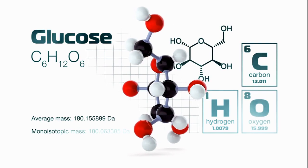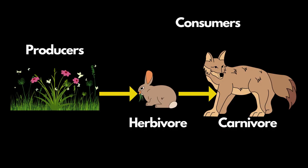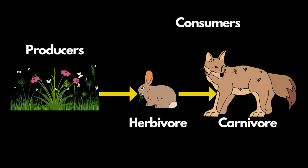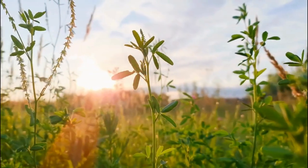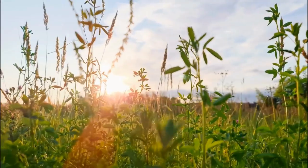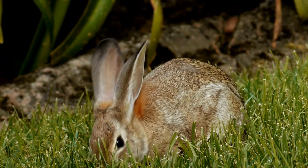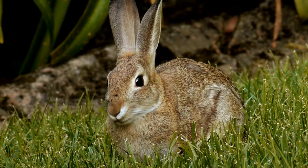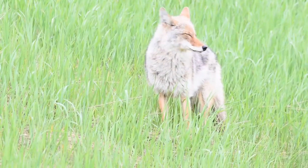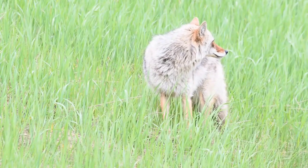Now the energy doesn't stop there. It flows through the ecosystem, much like a game of tag. Plants, our producers, are it first — they catch sunlight and convert it into chemical energy. Then along comes an animal, a herbivore, and eats the plant — tag — and the energy is passed. This energy then transfers to a carnivore or omnivore that eats the herbivore.